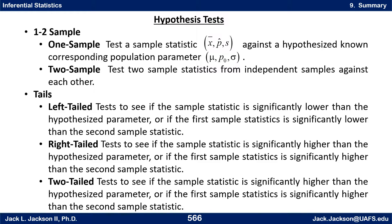Each of these tests has three varieties: a left, right, or two-tailed test. A left-tailed test tests to see if the sample statistic is significantly lower than the hypothesized parameter, or if the first sample statistic is significantly lower than the second sample statistic in the two sample version. Right-tailed tests are the opposite — we test to see if the sample statistic is significantly higher than the hypothesized parameter, or if the first sample statistic is significantly higher than the second.